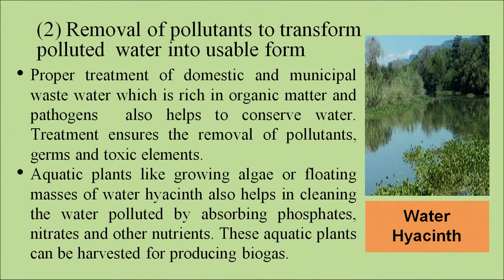Removal of pollutants to transform polluted water into utilizable form. Proper treatment of domestic and municipal wastewater, which is rich in organic matter and pathogens, also helps to conserve tremendous amounts of water. Treatment ensures the removal of pollution, germs, and toxic elements. Aquatic plants like water hyacinth also help towards this aspect — they absorb pollutants like phosphates, thereby making the water usable. These aquatic plants can be harvested later for producing biogas.